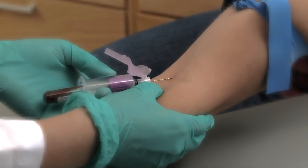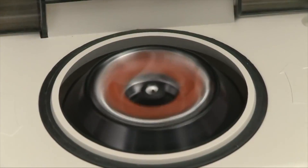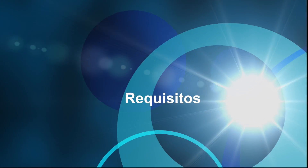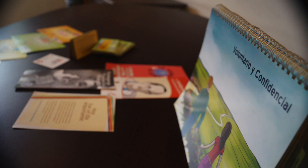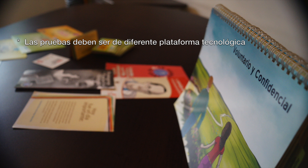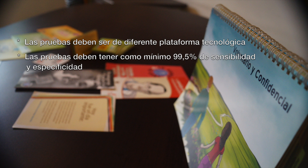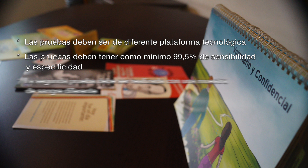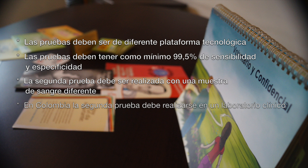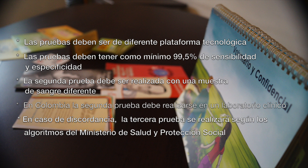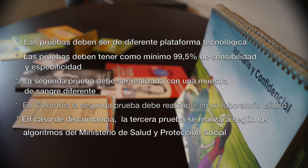Actualmente, la evidencia médica muestra que el diagnóstico del VIH se puede hacer solo con dos pruebas, siempre y cuando se cumplan los siguientes requisitos: las pruebas que se utilicen han de ser de diferente plataforma tecnológica; las pruebas deben tener como mínimo 99,5% de sensibilidad y especificidad; en todo el proceso diagnóstico deben haber dos muestras de sangre diferentes. En nuestro país, la segunda prueba siempre habrá de realizarse en un laboratorio clínico. En casos de discordancia entre los resultados de la primera y la segunda prueba, se debe realizar una tercera prueba de desempate también en el laboratorio clínico, según los algoritmos diagnósticos del Ministerio de Salud y Protección Social.